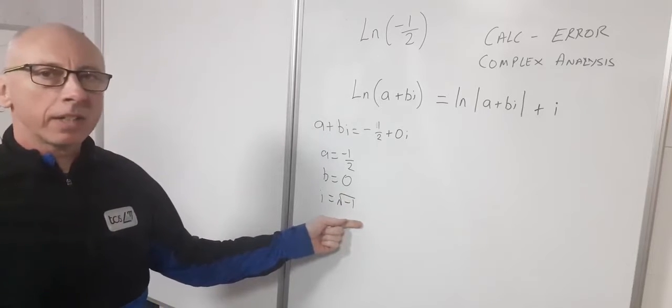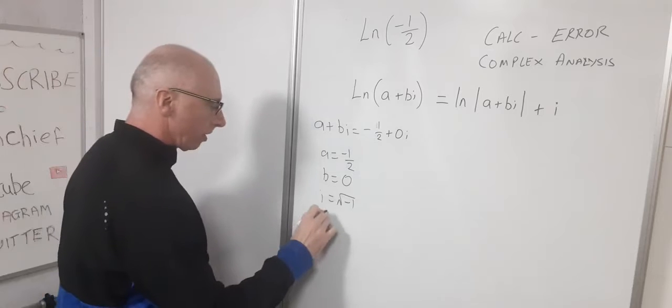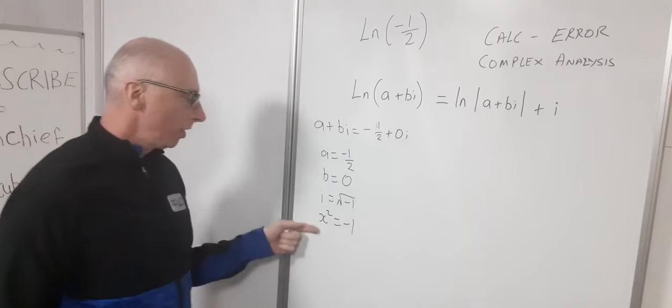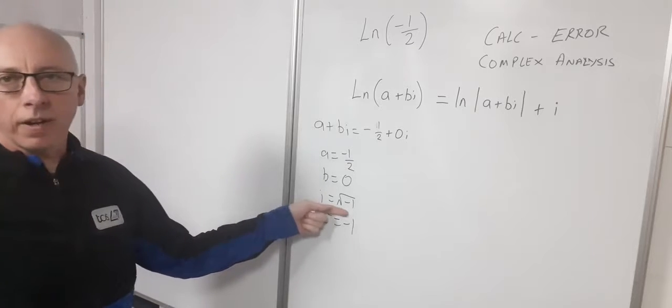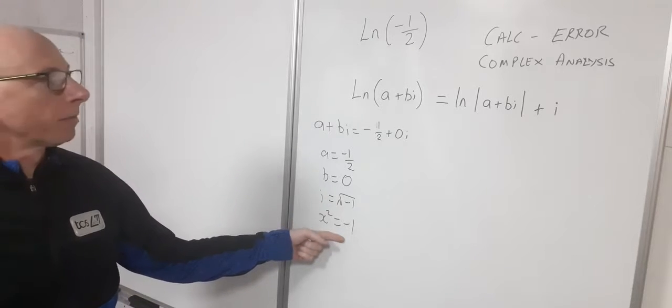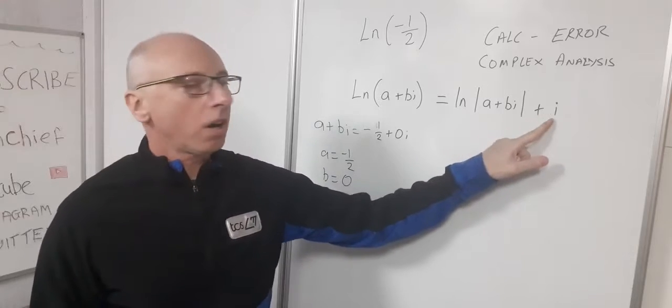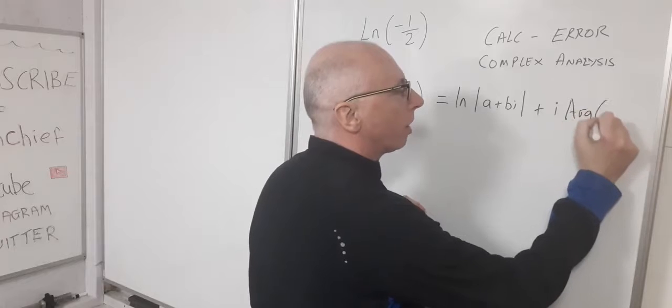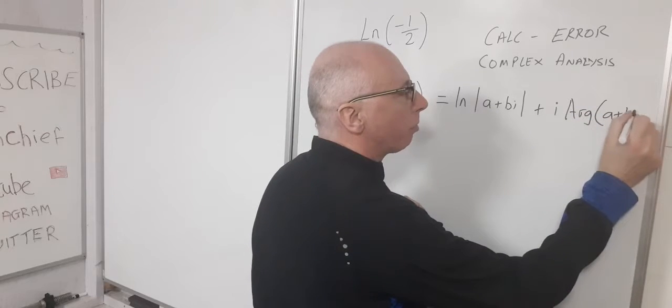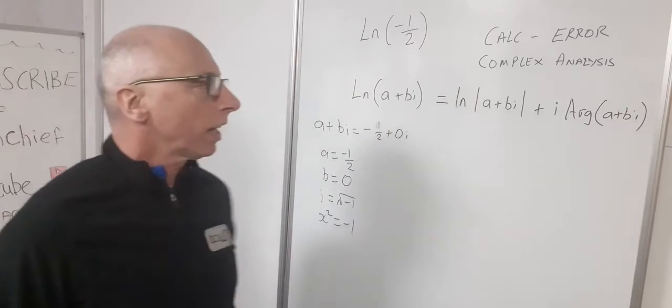We won't get anything out of that in our calculator. Basically what we have here is x squared equals minus one and that's an equation we can't solve. That's when we use our i. The natural log of a plus bi equals the log of the absolute value plus i times the principal argument of a plus bi. That's our way in which we can calculate this result.